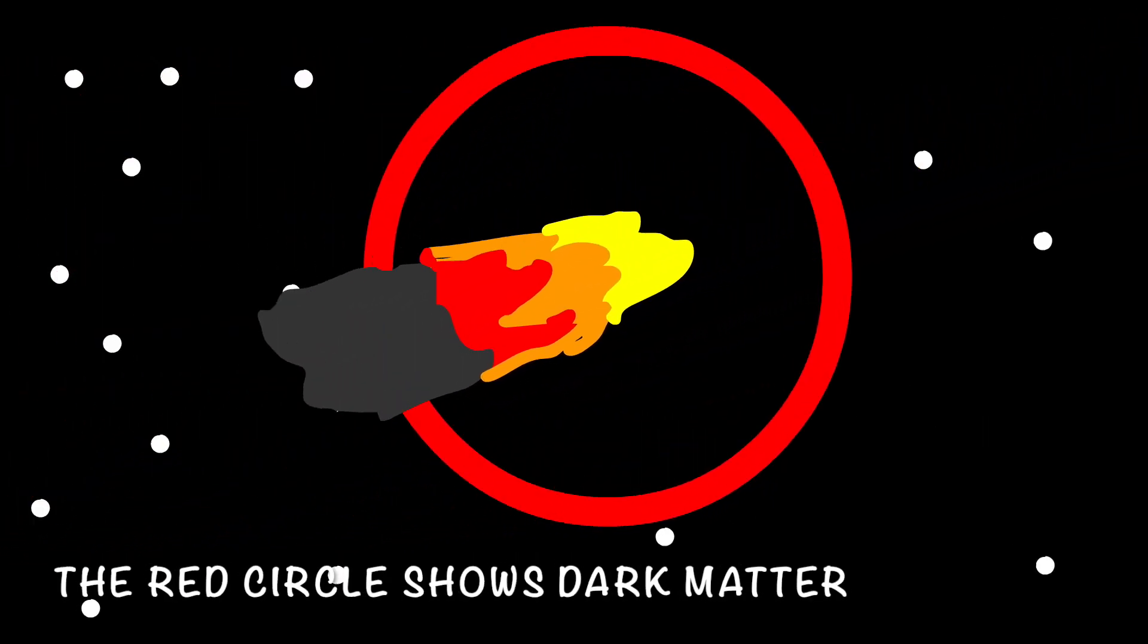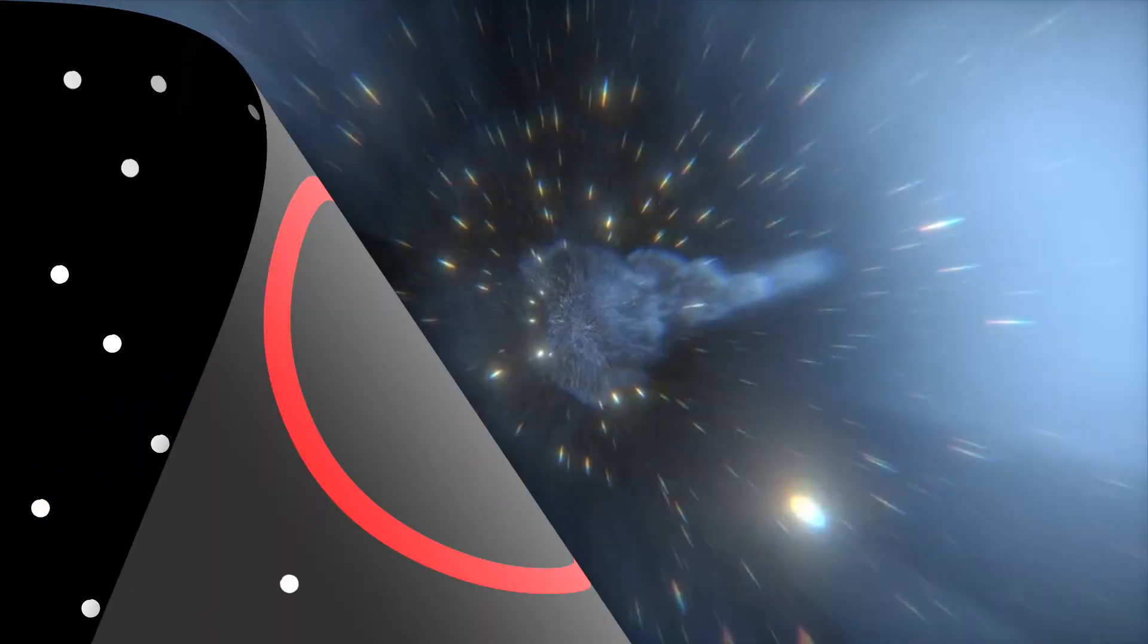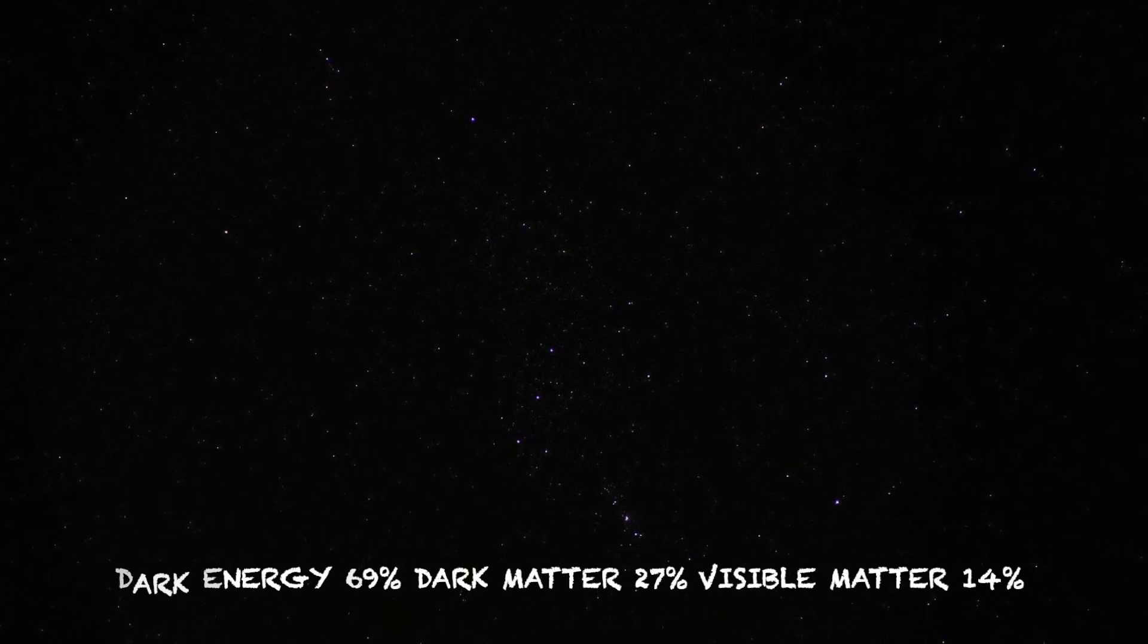Now only 15% of the universe is made out of visible matter. Visible matter technically means stars, planets and galaxies. But the rest of the 85% is made by dark matter 25% and dark energy which is 69%.